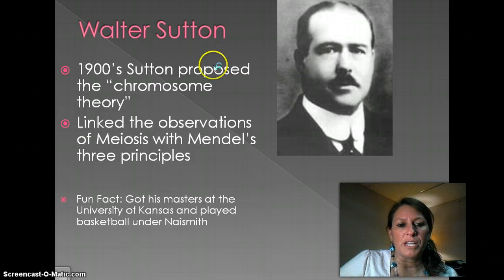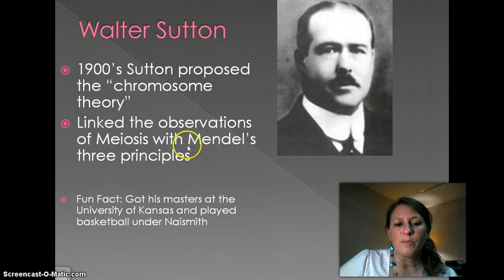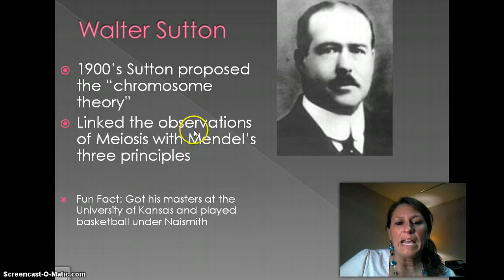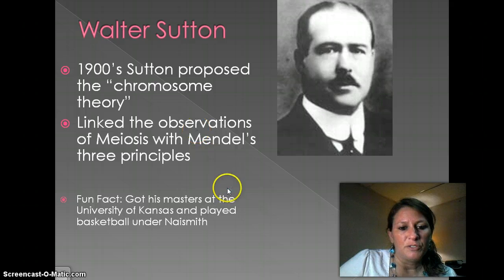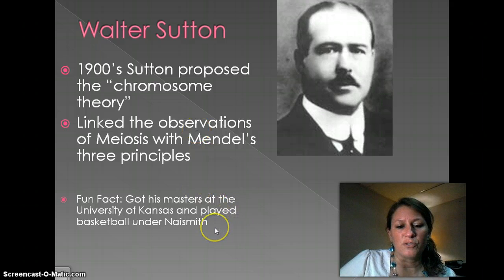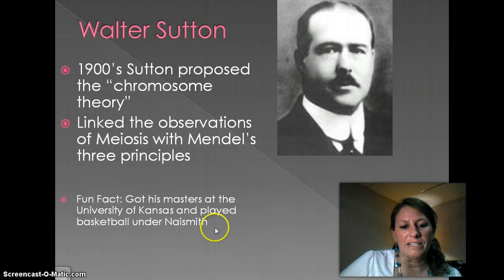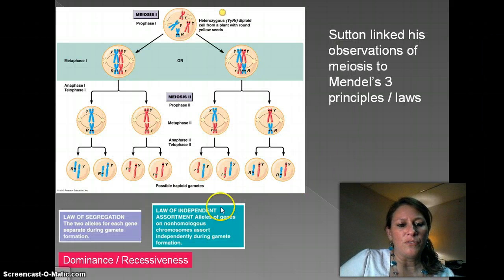Our second scientist is Walter Sutton. He had observations about meiosis, and he took what Mendel had written up in his journals on the three principles and came up with what is known as the chromosome theory. There's also a fun fact about Sutton and his association with Kansas. Let's look at how these three principles of Mendel link together with what Sutton had.